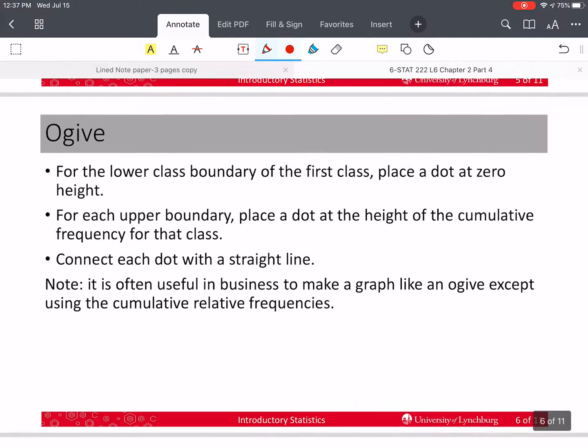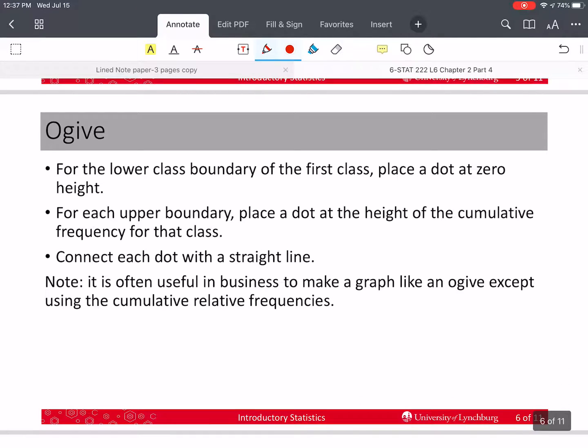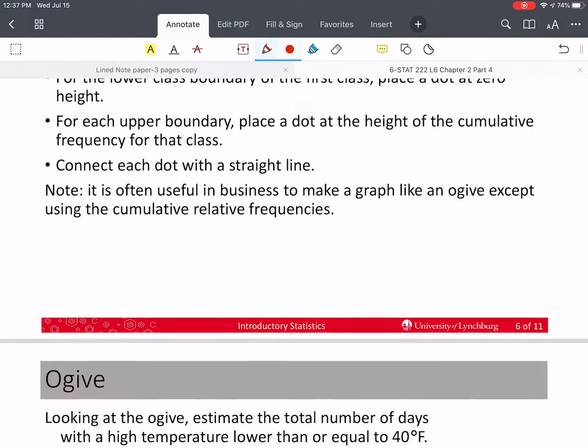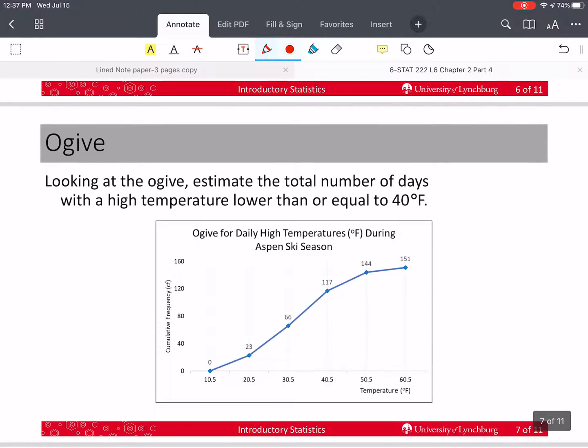Now, an ogive. How do we do that? Well, here's the rules. I'll let you read through that at another time. But let me describe what we do. So what we do is we take these boundaries and we plot the boundaries here. And so for the first boundary of the first class, we plot a zero.